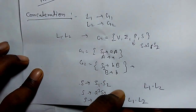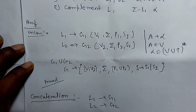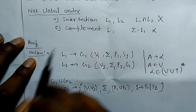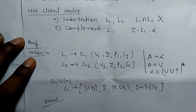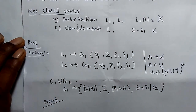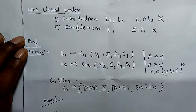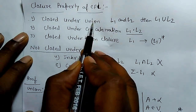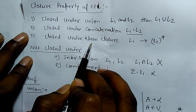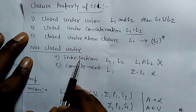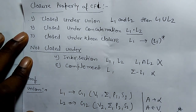Similarly, we can prove it for Kleene closure. For intersection and complement, we may or may not get a context free language. So the closure properties of context free languages state that they are closed under union, concatenation, and Kleene closure only — they are not closed under intersection and complement. Thank you.